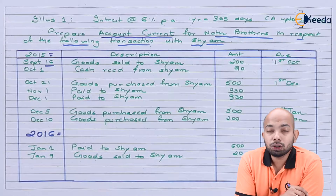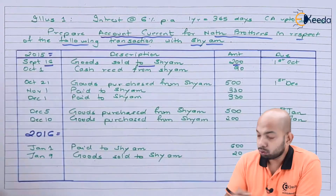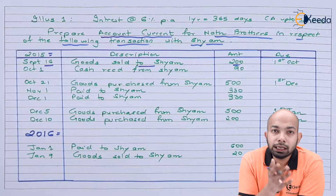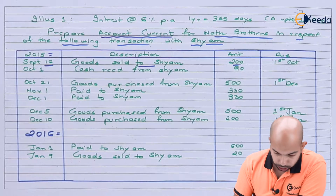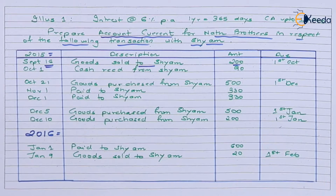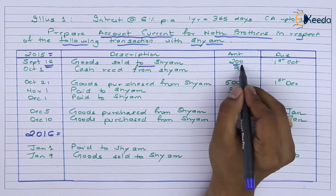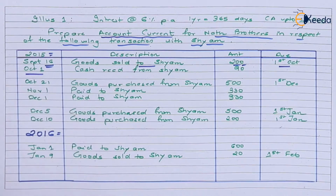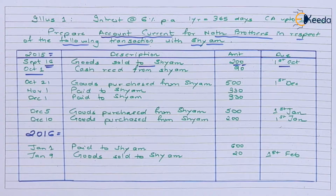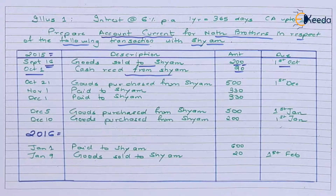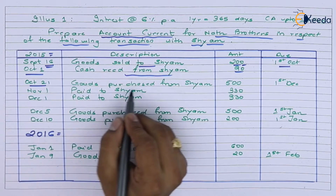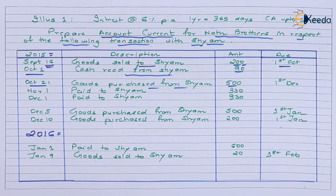For example, on September 16 goods were sold to Sham for 200 rupees, with a due date of 1st October. On 1st October, cash of 490 rupees was received from Sham with no due date mentioned. On 21st October, goods were purchased from Sham worth 500 rupees with a due date of 1st December 2016.